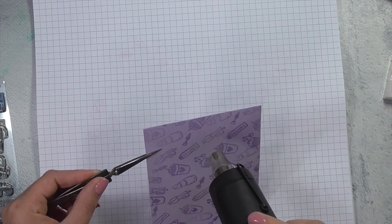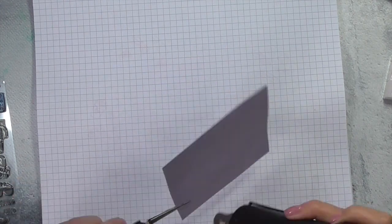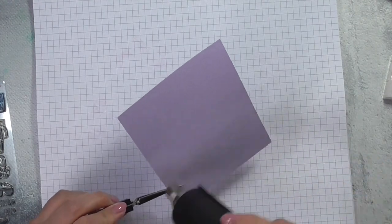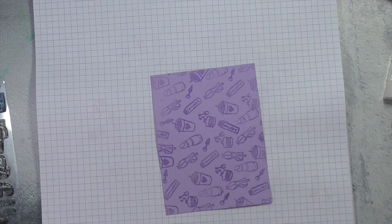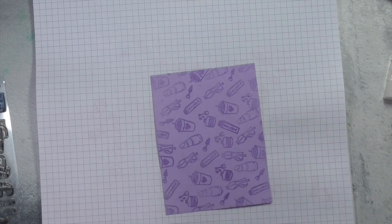So I allowed my heat gun to get really good and hot before I brought it to the paper, but because there was such a large surface area for me to heat emboss, I did have a little bit of warping. So I went ahead and just applied some heat to the back of the paper and that helped to straighten it out.